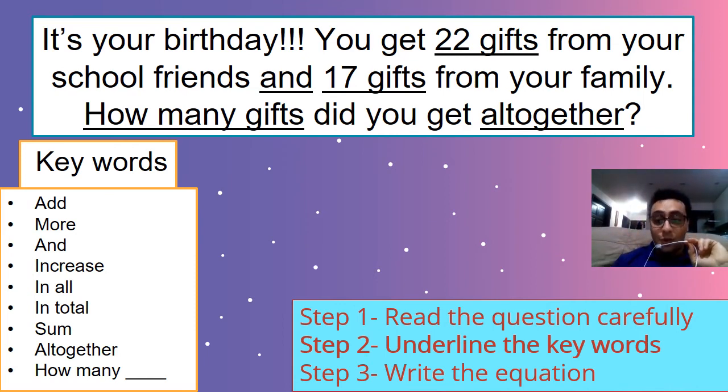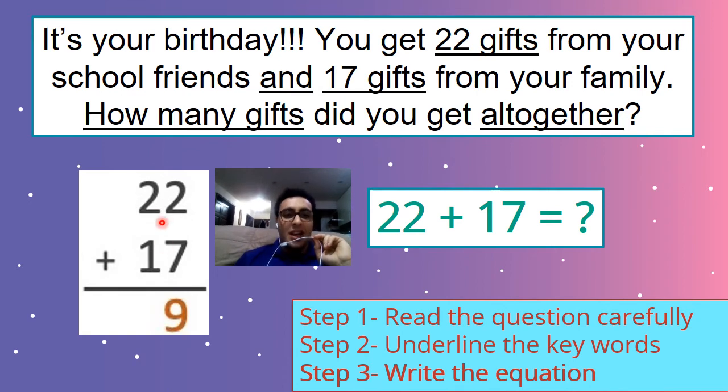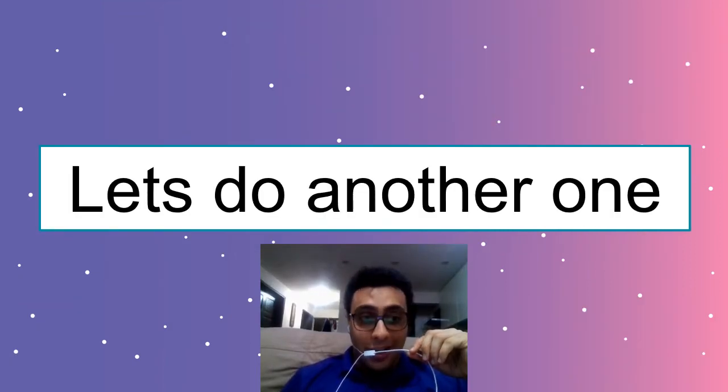Write the equation and full answer. So, 22 plus 17. It's sometimes hard to do it like this. So we can write it like this. Let's start with the ones. 2 plus 7 equals 9. Easy. 2 plus 1 equals 3. So this was very easy because we didn't have to regroup. So the answer is 39. Remember, 39 gifts. See, gifts. How many gifts? It's the same. Okay. Let's go to another one. Let's go.